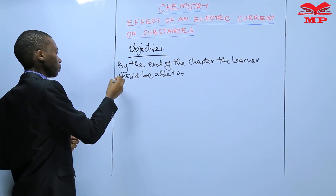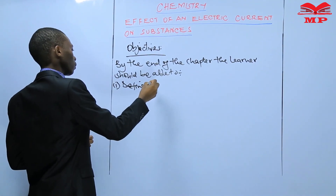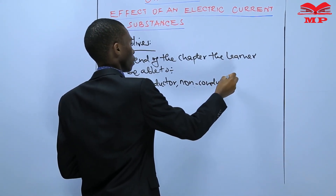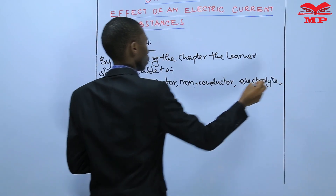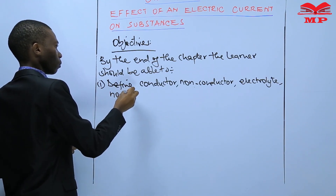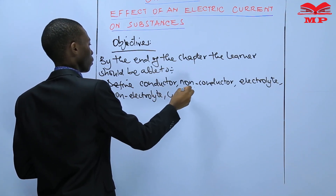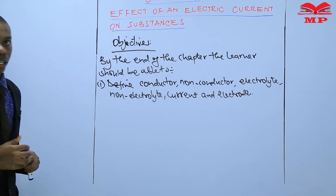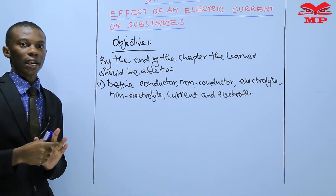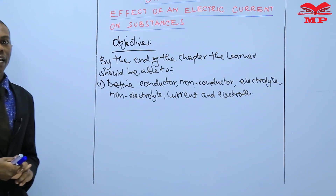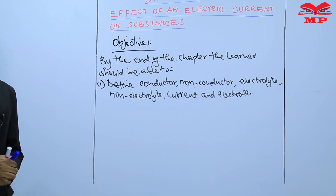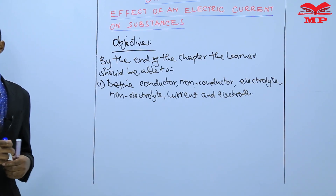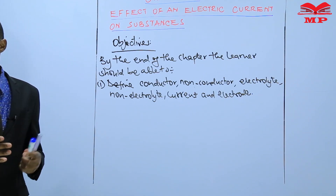One: define conductor, non-conductor, electrolyte, non-electrolyte, current, and electrode. By the end of the chapter you should be able to define all those terms. Second, you should be able to differentiate between a conductor and an electrolyte depending on the particles they contain.